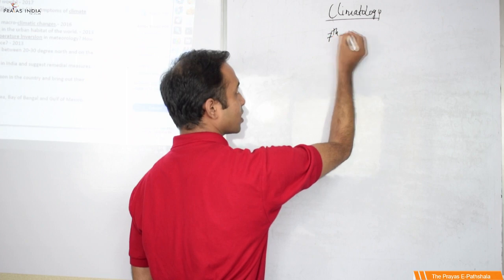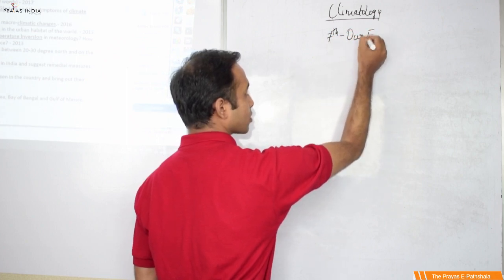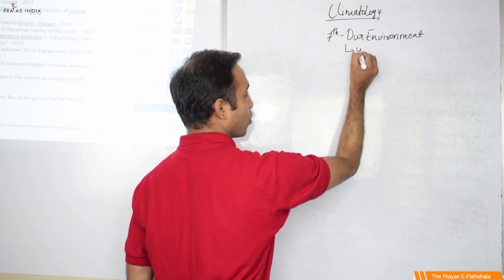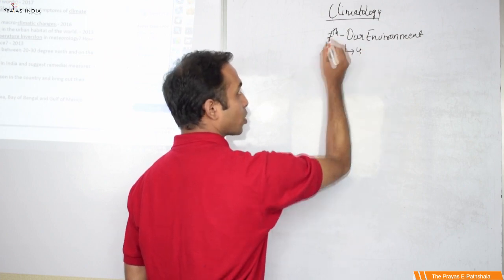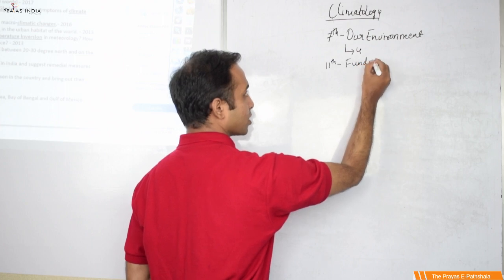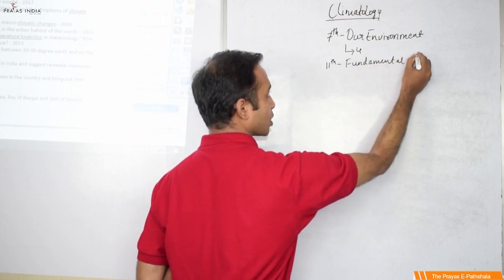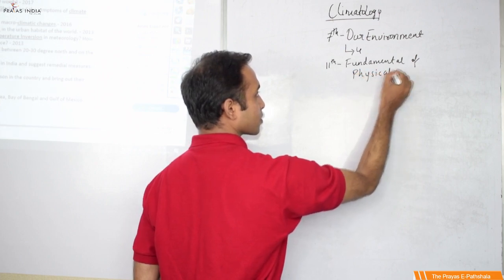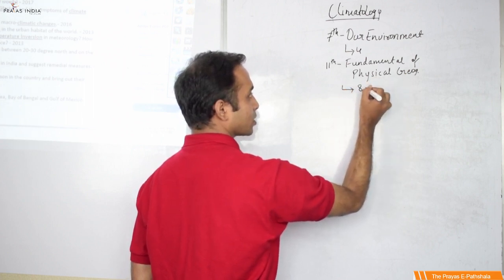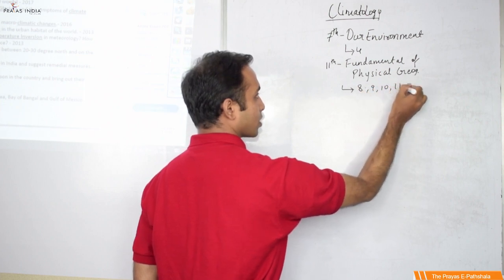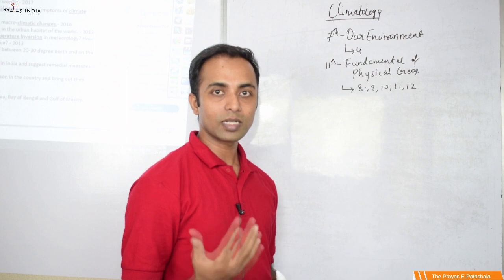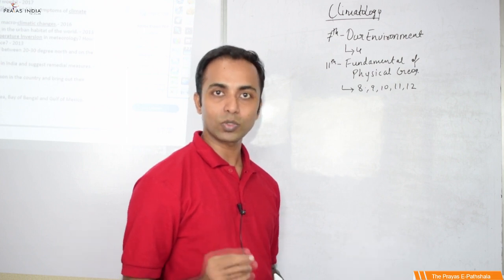If you refer your 7th standard NCERT, 'Our Environment', chapter number 4 is a very important topic to understand the basics of climatology. Again, in your 11th standard NCERT, 'Fundamentals of Physical Geography', chapters 8, 9, 10, 11, and 12 are key. Having a brief idea about climatology from these two important standards, we can further understand its importance.